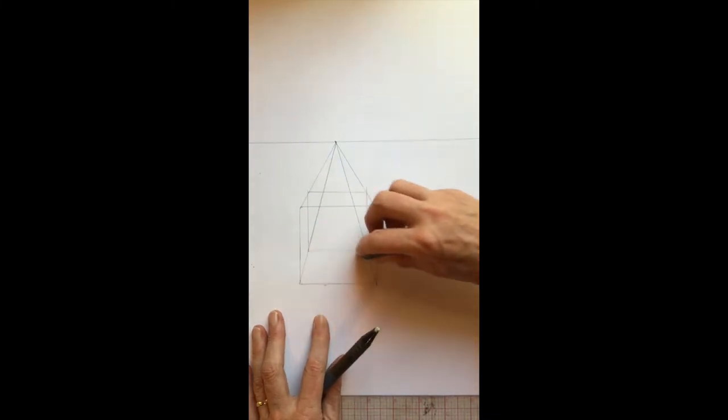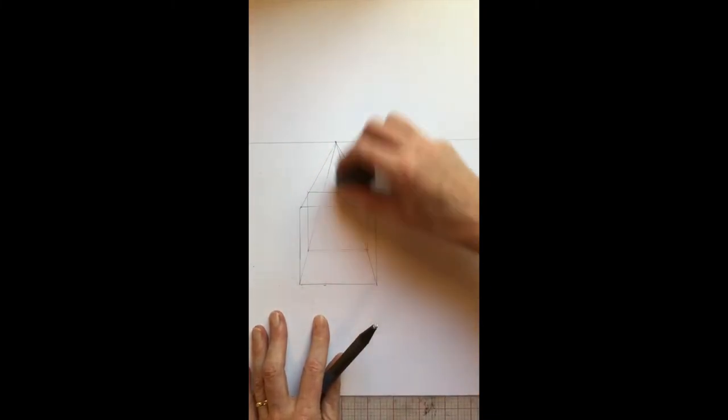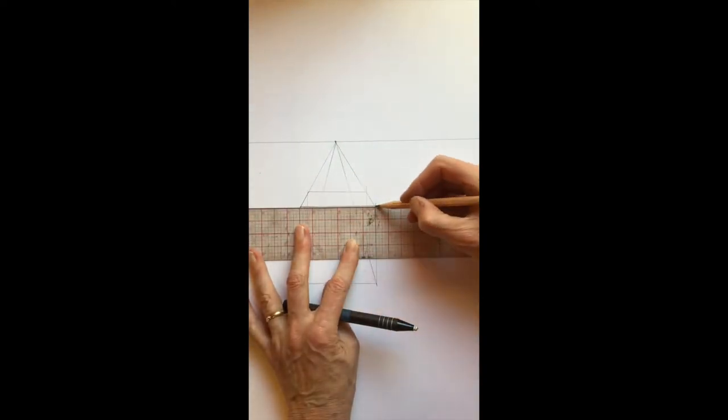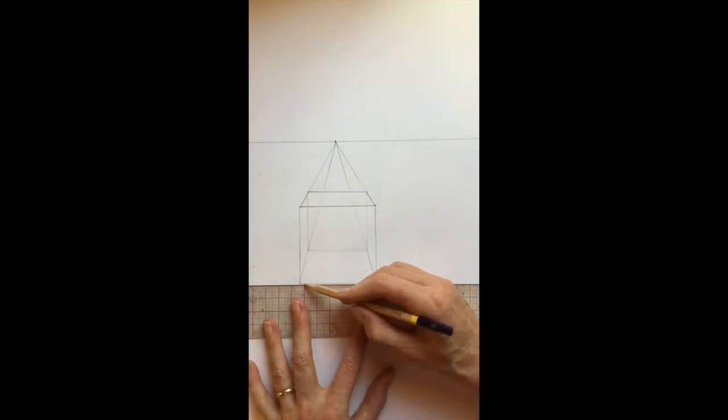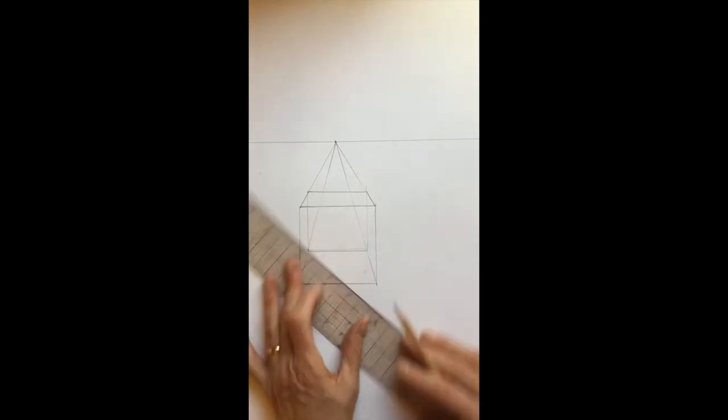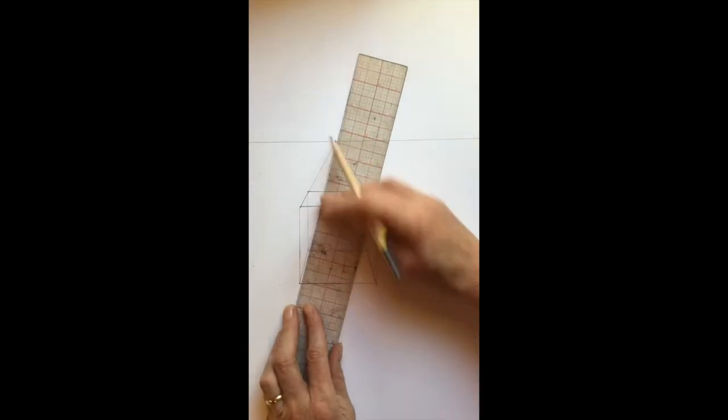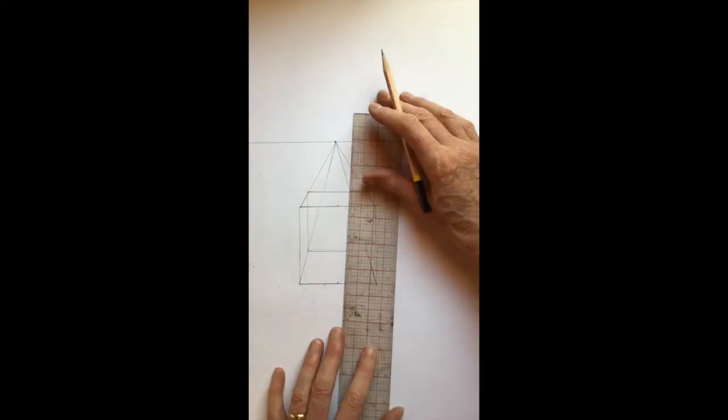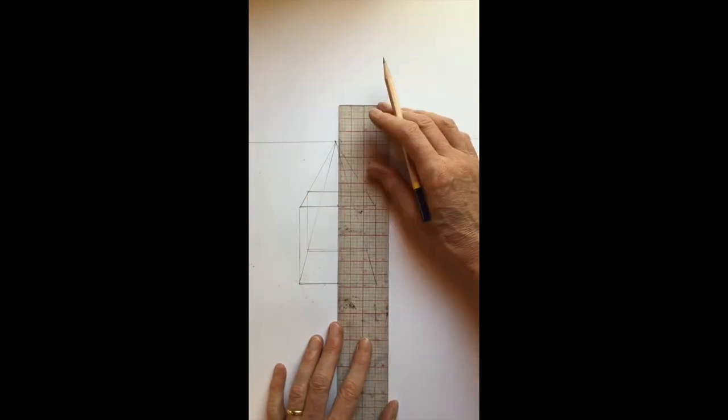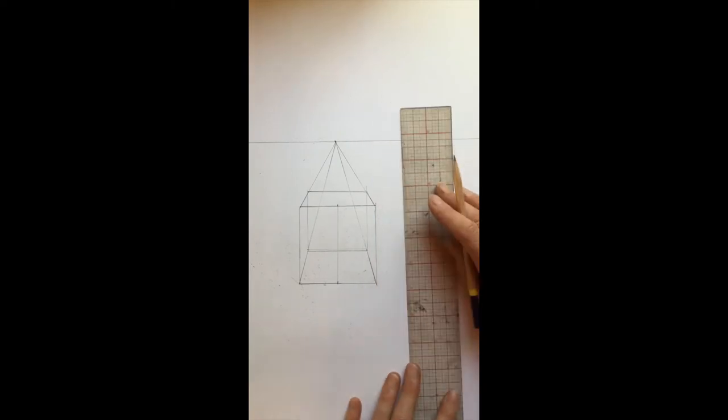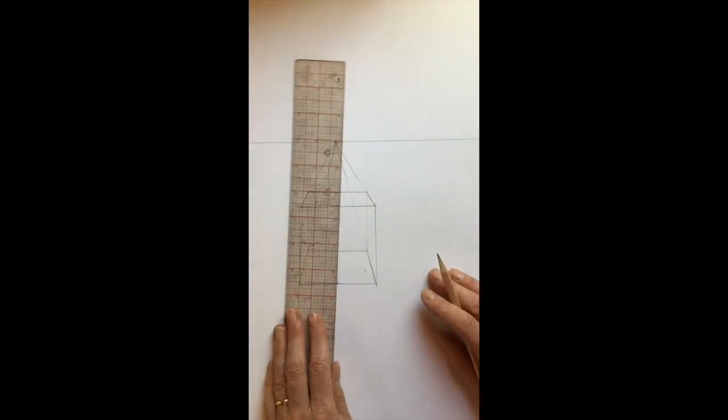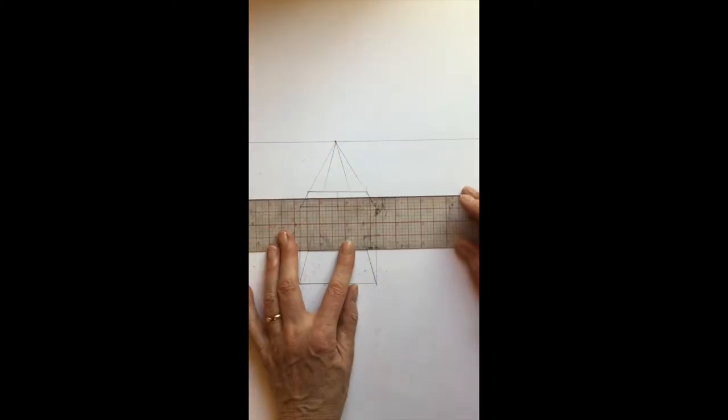Let's go over the rules of ellipses while I'm finishing this up. The first rule is that ellipses are always symmetrical from side to side and top to bottom. The second rule is that ellipses are always rounded on the ends—the only exception is if the ellipse is sitting right on the eye level line. And the last rule is that ellipses are always widest in the center and taper towards the ends.